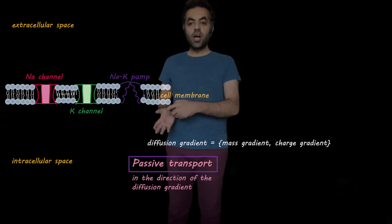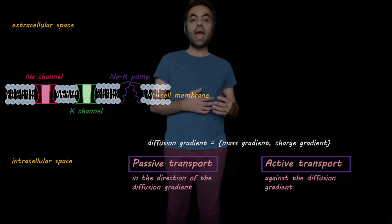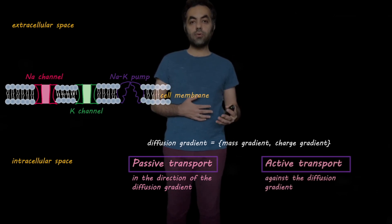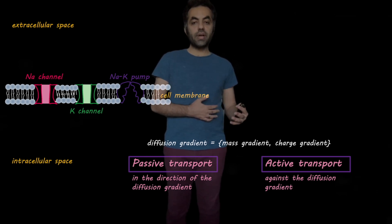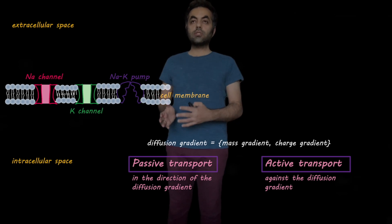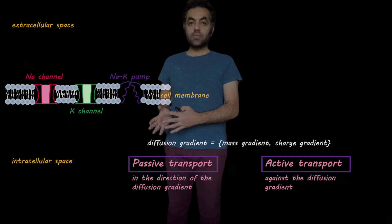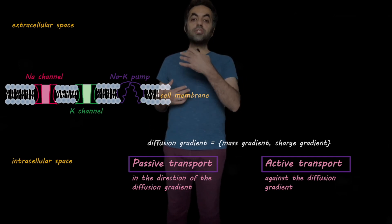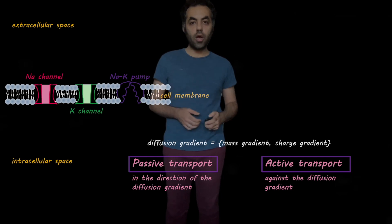On the other hand, the sodium-potassium pump helps with active transport of ions, moving the ions against the diffusion gradient. For example, moving sodium ions from the intracellular space where we have less sodium ions to the extracellular space where we have more sodium ions.